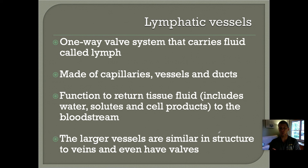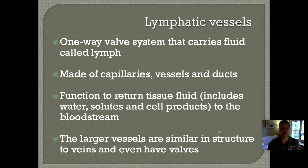The lymphatic vessels are actually one-way systems, just like arteries and veins are one-way, and they're designed to carry a fluid called lymph. The system is composed of capillaries, larger vessels, and ducts which lead into the bloodstream, and their job is to return tissue fluid — water and dissolved substances — back to the bloodstream. The larger vessels are similar in structure to veins and even have valves. Unlike the blood's continuous round-trip system, lymph is a one-way system from the tissues into the bloodstream.